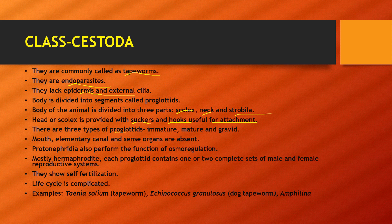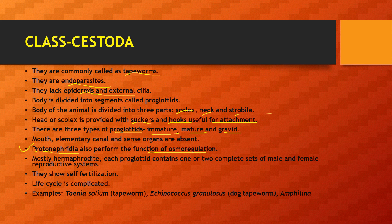Proglottids are of three types: immature, mature, and gravid. The mouth and alimentary canal are absent. Sense organs are absent. The excretory organ is protonephridia. Importantly, in Class Cestoda, protonephridia has two functions — excretion and osmoregulation. In Class Turbellaria and Class Trematoda, protonephridia functions only as an excretory organ, but in Cestoda it also helps with osmoregulation.